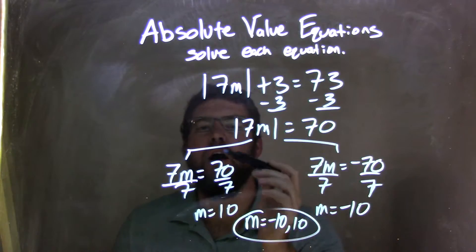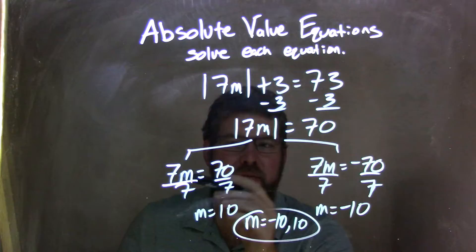At that point, I broke it apart into two equations, positive and negative. So we had 7m, all that's inside the absolute value, equals 70.